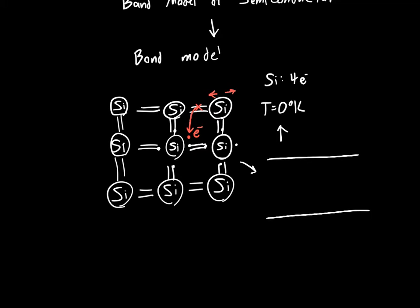And saying that initially, at T equals zero Kelvin, all the electrons are below a certain energy. So they're all below what we call the valence band energy. They're all in the valence band.